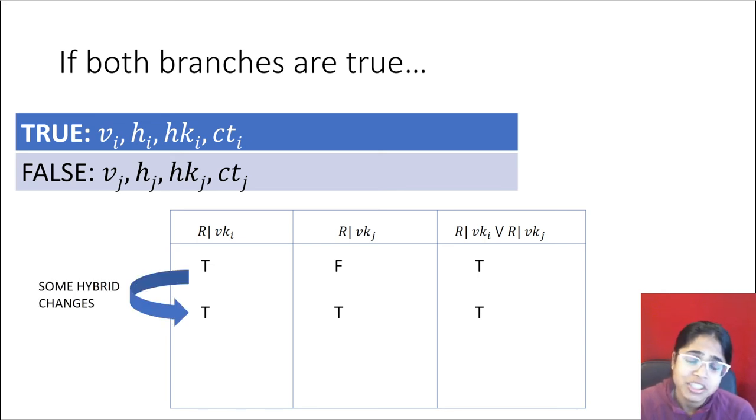Those hybrid changes are not going to work for us. The other thing you could do, maybe, is could you make both branches false and make sure that vi and vj are both just random values? Well, not really, because the niwi has soundness, and so if both branches are false, then the niwi overall will be false. So we need some way of making both branches for vki and vkj false while still making this overall niwi true.